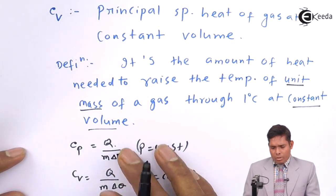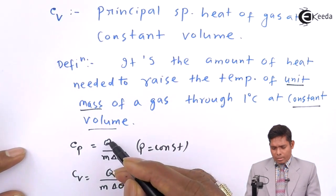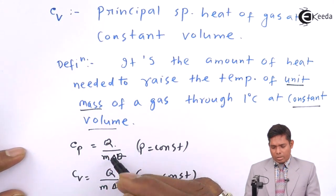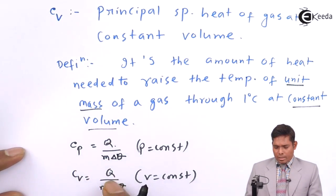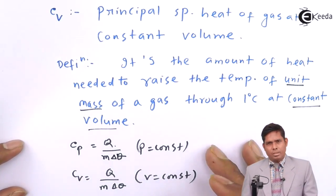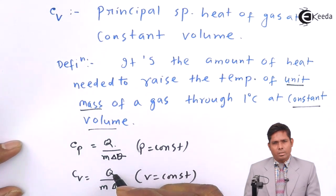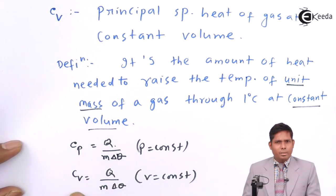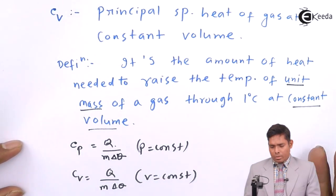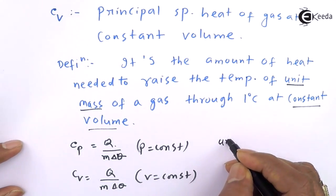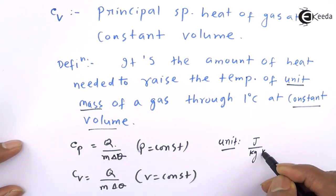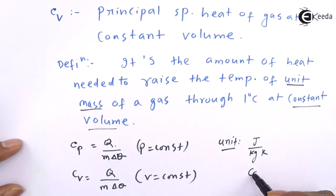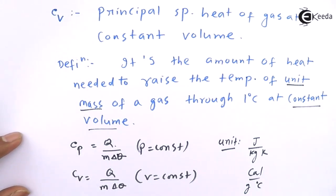The unit for both Cp and Cv will be the same since the formula is the same — the difference is only in the heat content. You should not confuse the two Q values and cancel them. The unit is joules per kg kelvin, or in heat units it can be calories per gram degree centigrade.